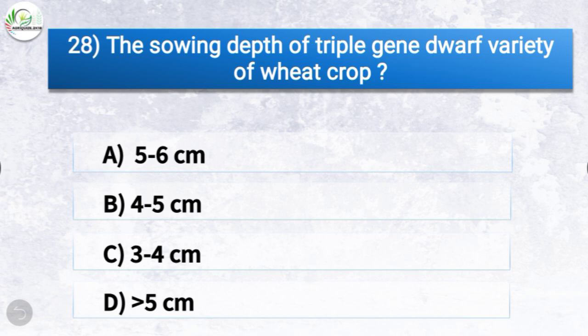Question number twenty-eight: the sowing depth of triple gene dwarf variety of wheat crop is how much? The options are five to six centimeter, four to five centimeter, three to four centimeter, or greater than five centimeter. The correct answer is option C, three to four centimeter. So the sowing depth of triple gene dwarf variety of wheat crop is three to four centimeter.